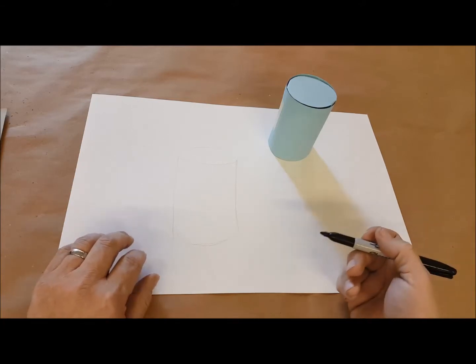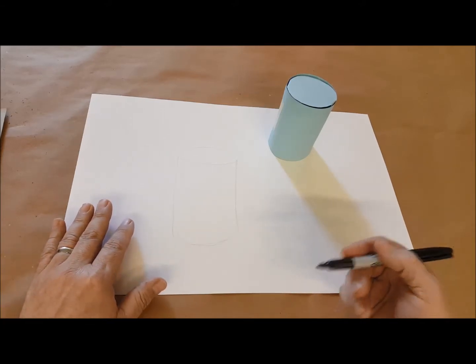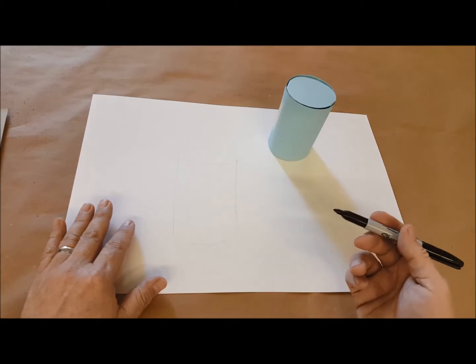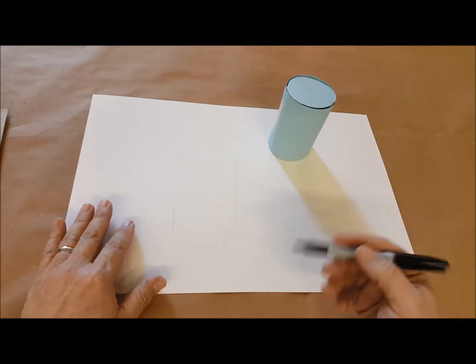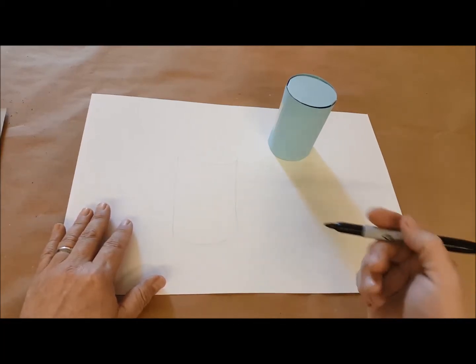We're going to talk about using crosshatching to create shadows. Using a black pen seems kind of counterintuitive. I mean, you can't really make grays out of it, but actually you can with this technique.